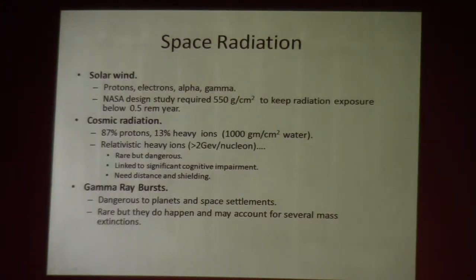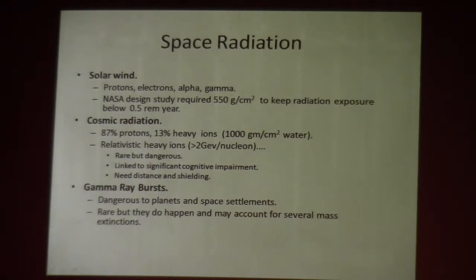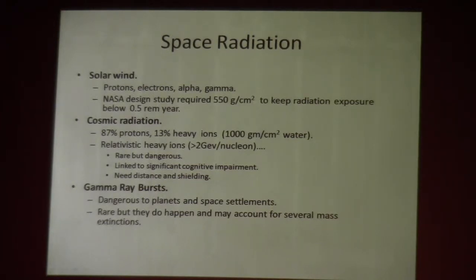One of my concerns about space settlements is space radiation. The solar wind generates protons, electrons, alpha particles, and some gamma. NASA has looked at that pretty closely and concluded that if you provide shielding of 550 grams per square centimeter, you can cut down the radiation exposure for people living on the space settlement to about half a rem a year. By way of background, we get about 0.4 rem a year just here on Earth — so that's pretty normal.